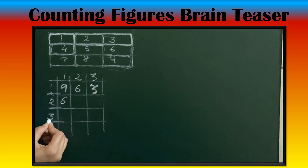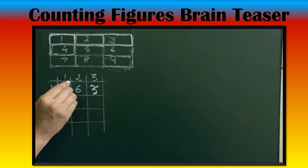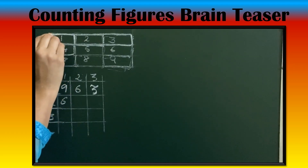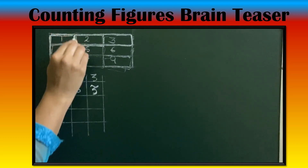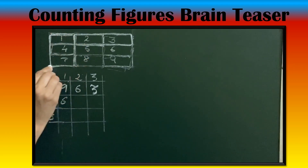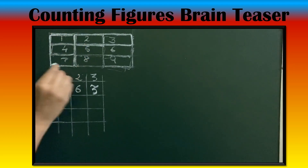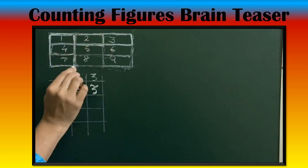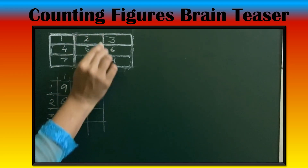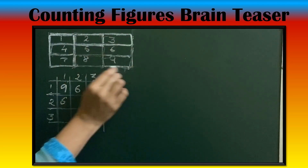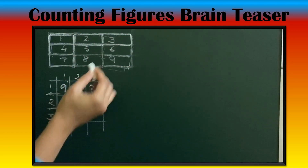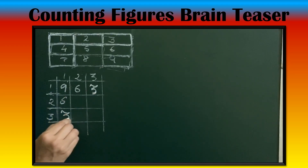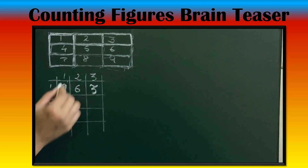Then 3 rows, 1 column. Cells 1, 4, 7 together is 1 rectangle; 2, 5, 8 together is 1 rectangle; 3, 6, 9 is 1 rectangle. So 3 rectangles of size 3 rows, 1 column.